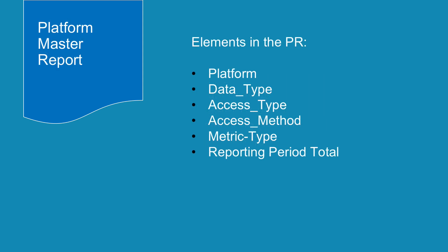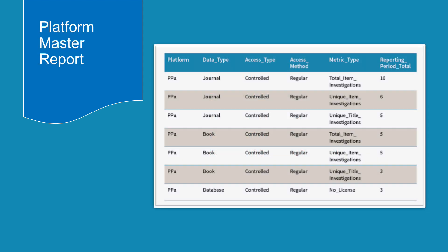Within a master report you will find the elements: platform, data type, access type, access method, metric type, and reporting period total. The PR is relatively compact — only six columns across, plus monthly breakdowns. Every metric type should be included, but for the purposes of this class only a subset is shown in the example.